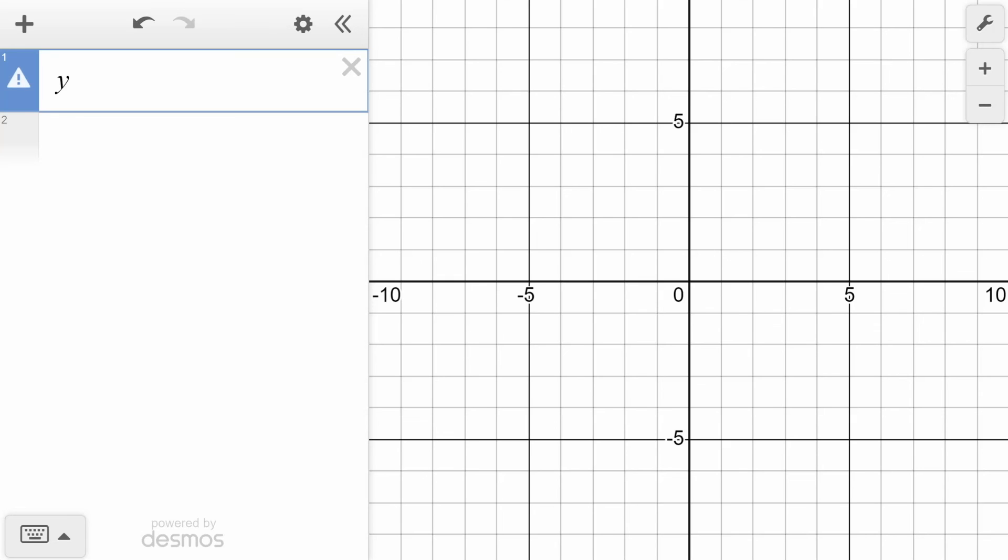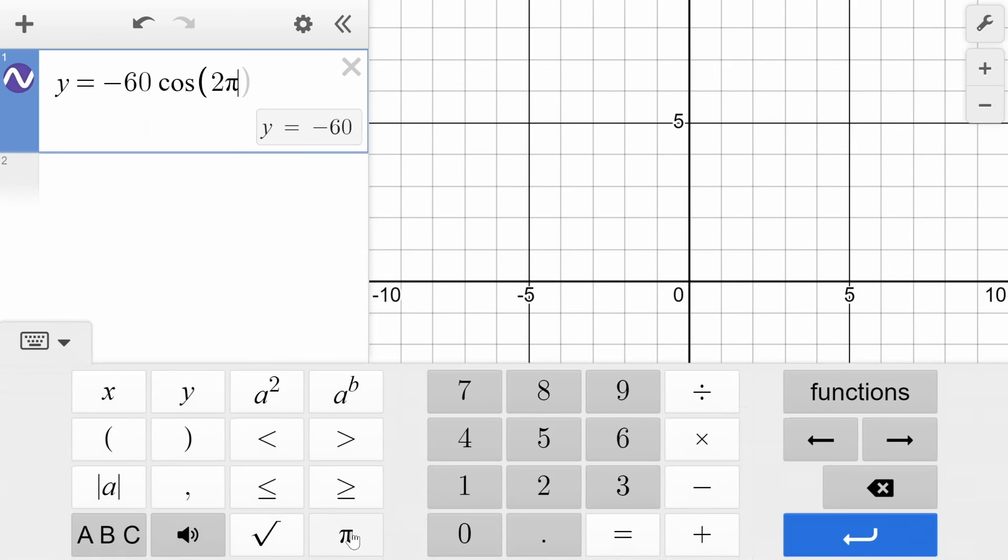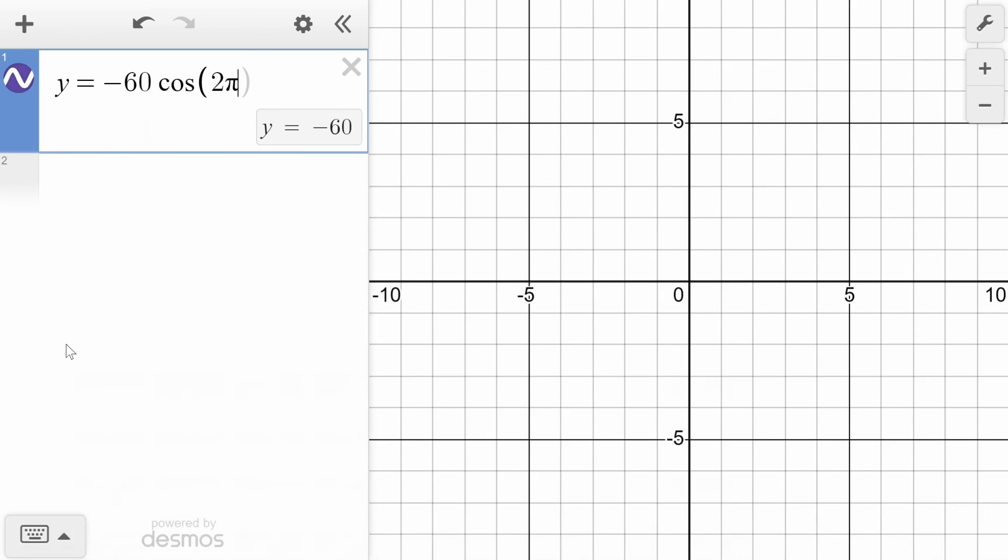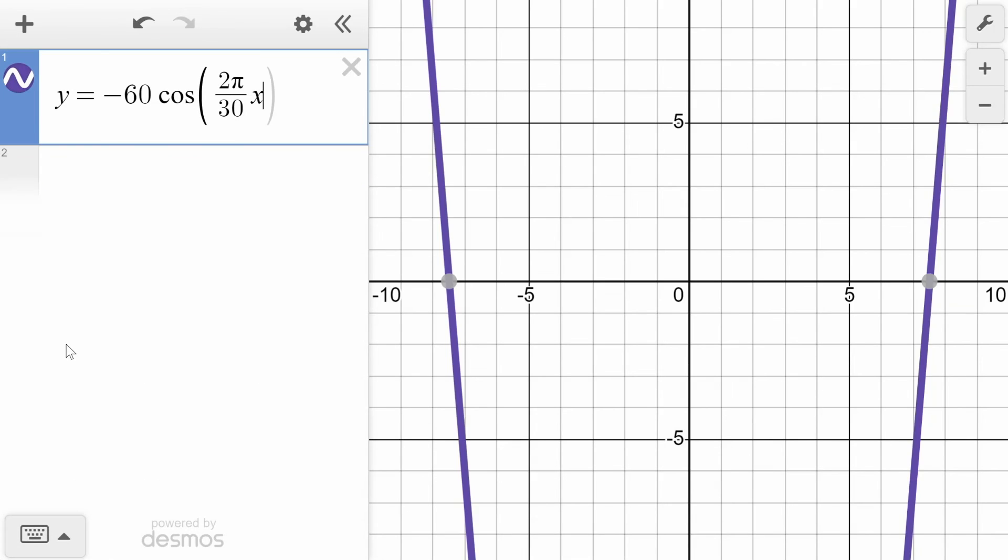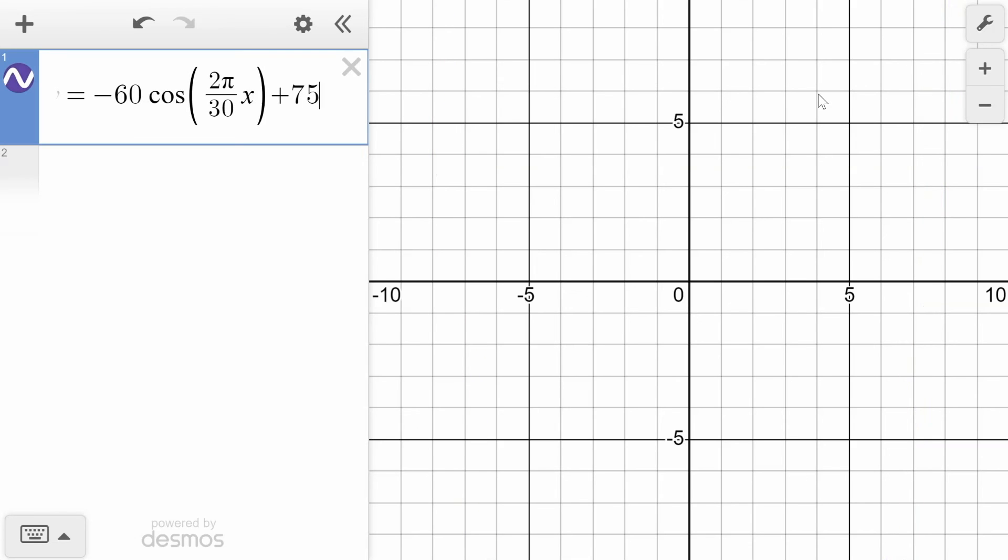So instead of h, y equals negative 60, cosine, we had 2π. On here, I have to go down to this menu to find the π, and then I'm going to put divided by 30. Now, I can put my x beside this like this, or you can put it up on top. It really doesn't matter. And then, of course, we have our plus 75.